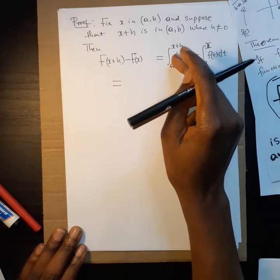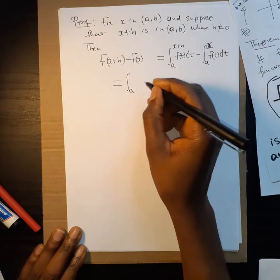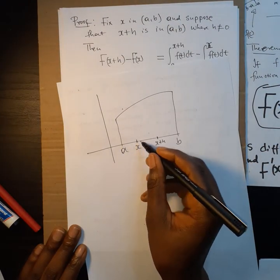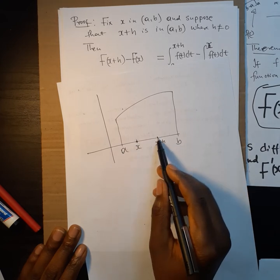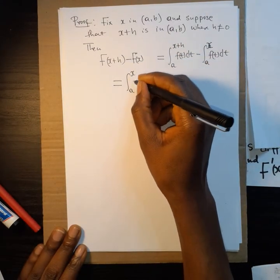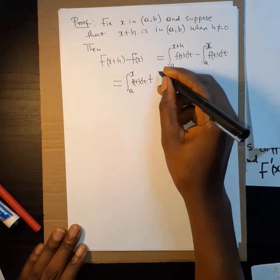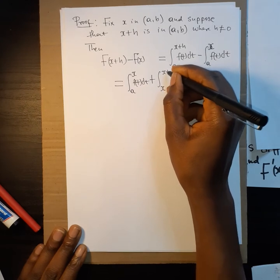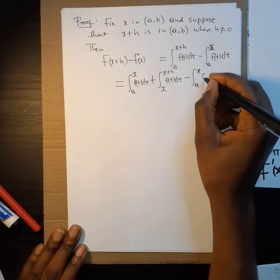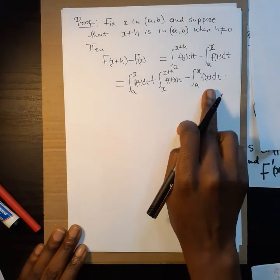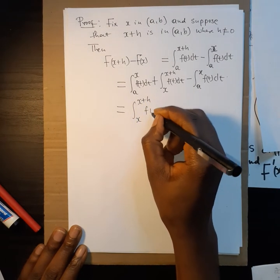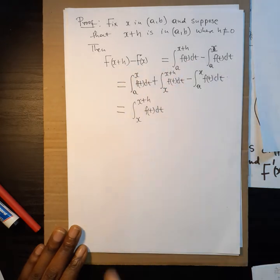We can break this up by moving from a to x, then from x to x+h. The integral from a to x+h equals the integral from a to x plus the integral from x to x+h of f(t) dt. Subtracting the integral from a to x, those cancel, and we are left with F(x+h) minus F(x) = the integral from x to x+h of f(t) dt.